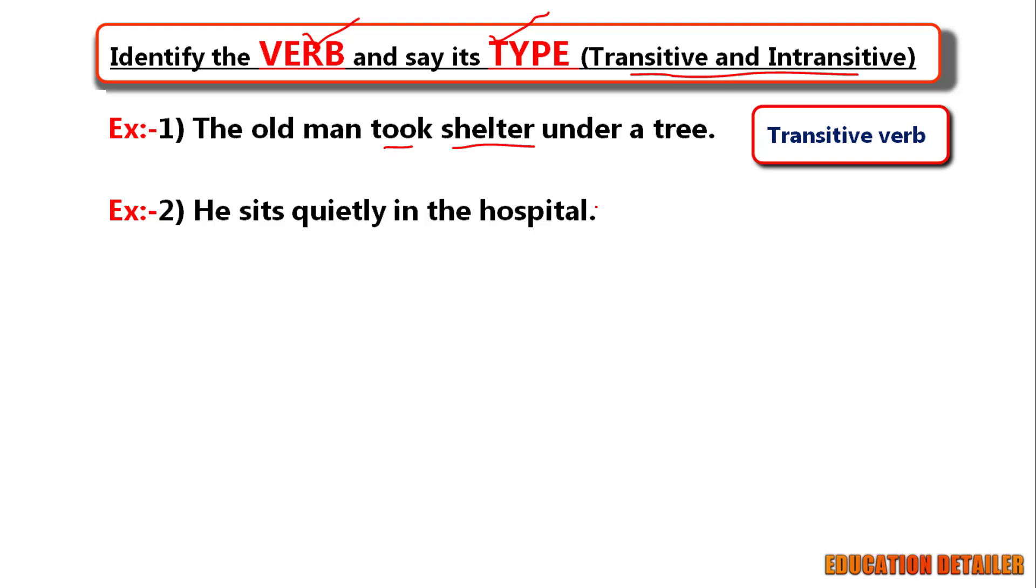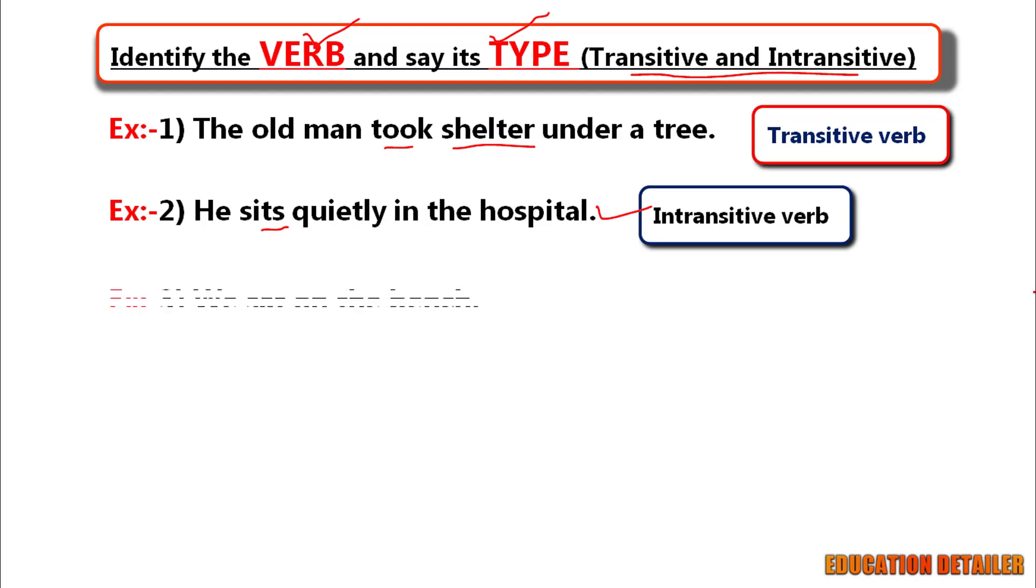He sits quietly in the hospital. Sit is an intransitive verb because here there is no object receives an action. Third one.